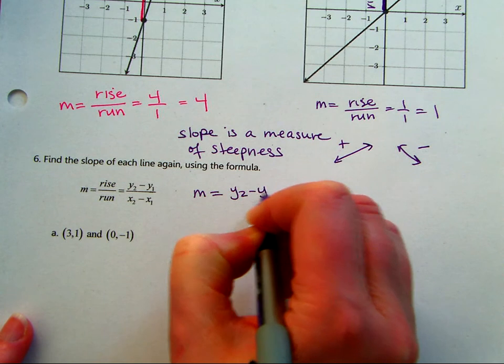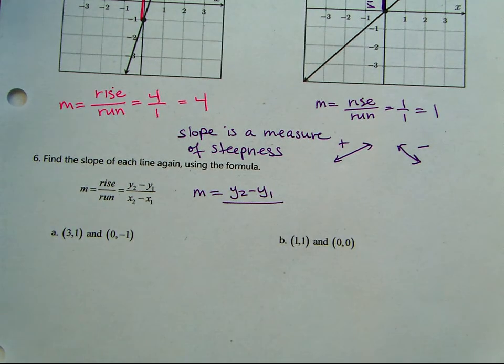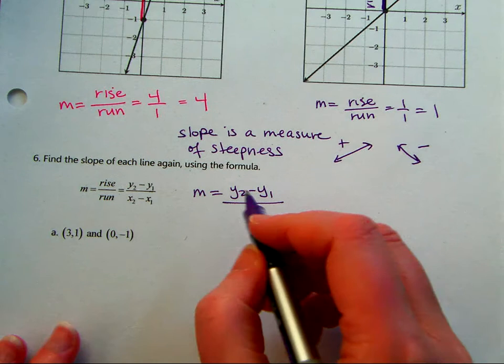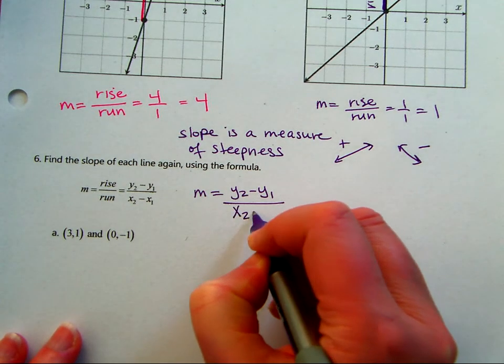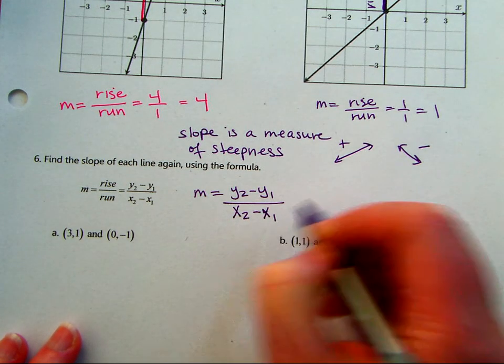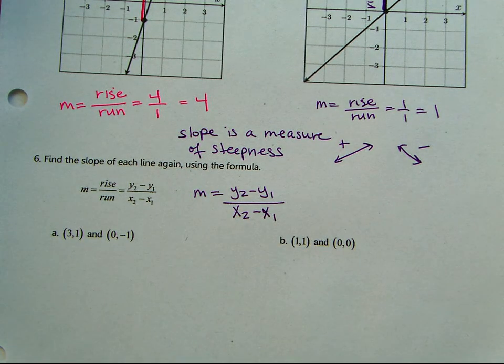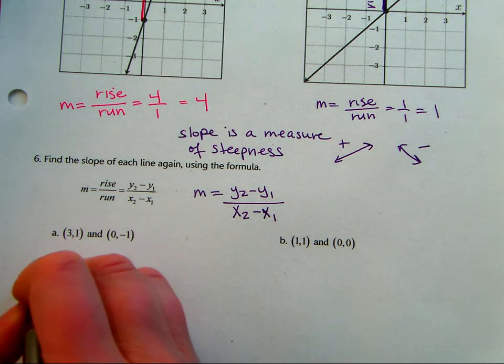Y2 minus y1, and these are subscripts, just to indicate the two different points. So these are subscripts over, like it's not y squared, it's y sub 2 over x2 minus x1. So let's try it. These are actually the same exact points that are on the graphs. So we should get the same answer. We can check our answer.